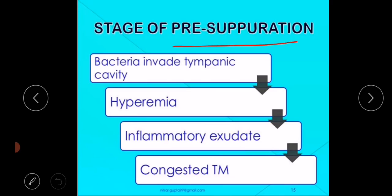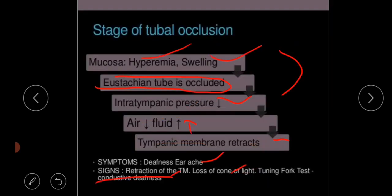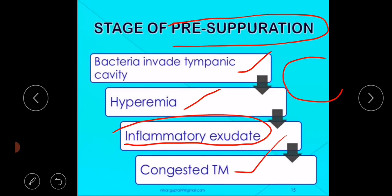In the stage of pre-suppuration, bacteria invade the tympanic cavity either through the Eustachian tube, through the external auditory canal, or rarely through blood. Hyperemia occurs, inflammatory exudate develops, and a congested tympanic membrane is observed. Signs also include loss of cone of light and conductive deafness on tuning fork test, with the additional finding that congested vessels on the tympanic membrane provide a cartwheel appearance.